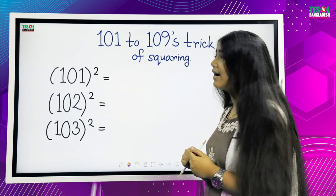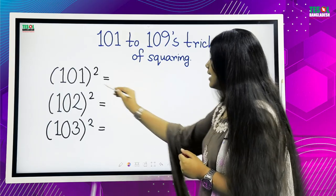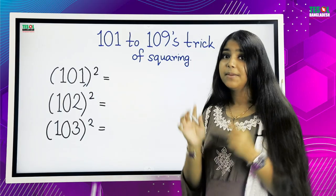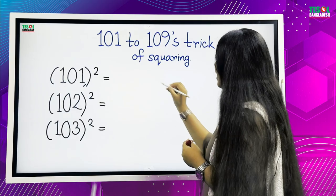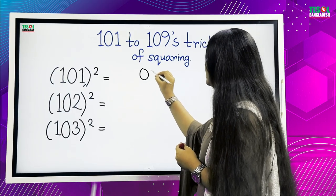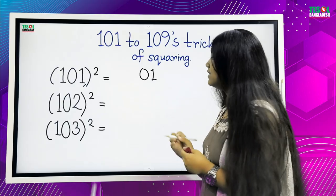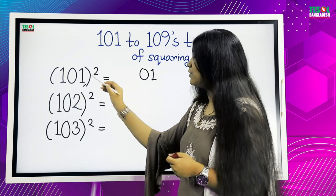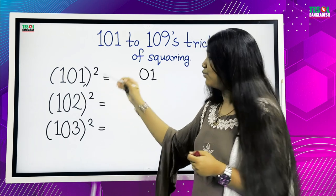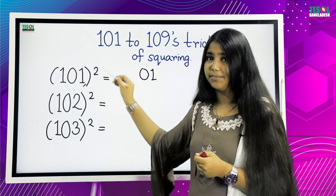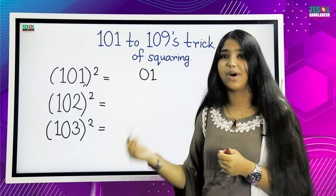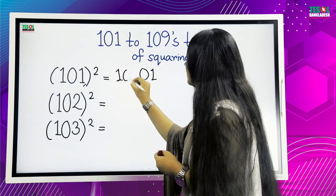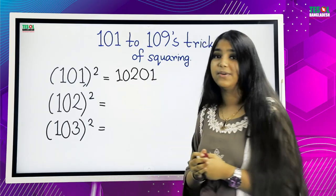At first, we will square the number which is in the ones place, that is 1. So, after squaring it, we get 1, but we will write 01 because we need two digits here. Okay, we wrote 01. Now, what is the last digit of this number? It is 1. So, we add 1 with the whole number. 101 plus 1 equals 102. So, our answer is 102, 01.